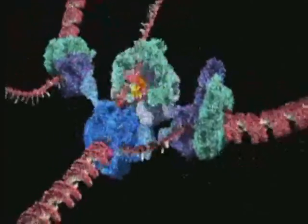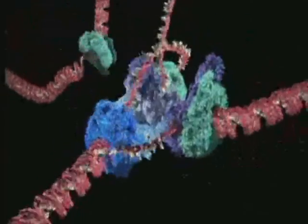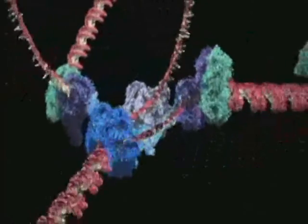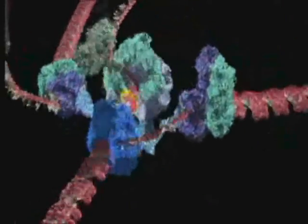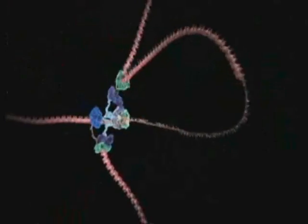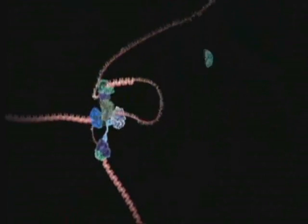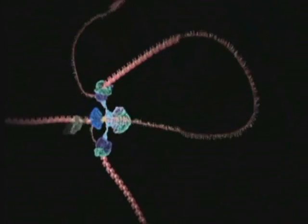The DNA to be copied enters the production line from bottom left. The whirling blue molecular machine is called helicase. It spins the DNA as fast as a jet engine as it unwinds the double helix into two strands.